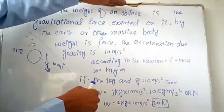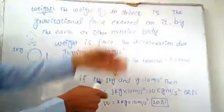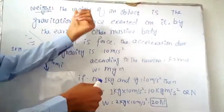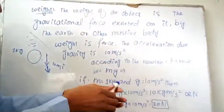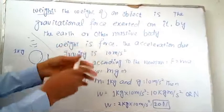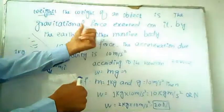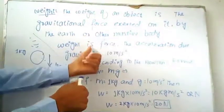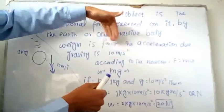Earth is a massive body and other massive bodies can also exert weight on an object. So weight therefore will be a force — weight is a force. Why? Because it is a gravitational force. We know that weight is a gravitational force, therefore it will be a force.